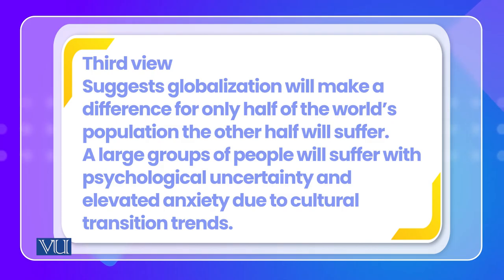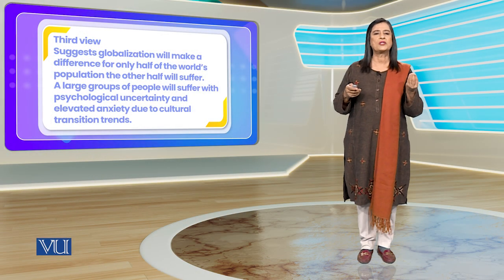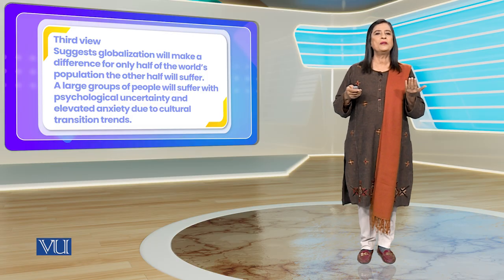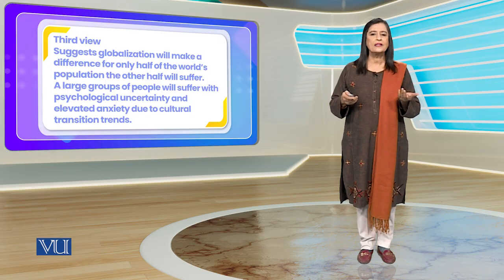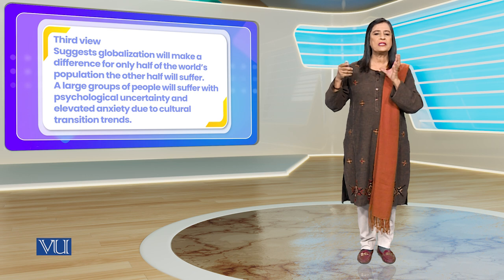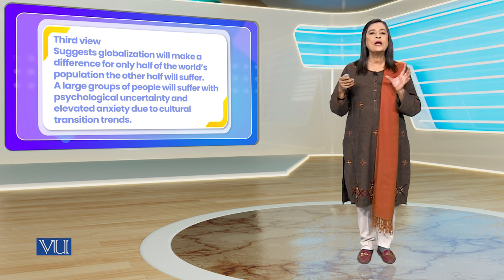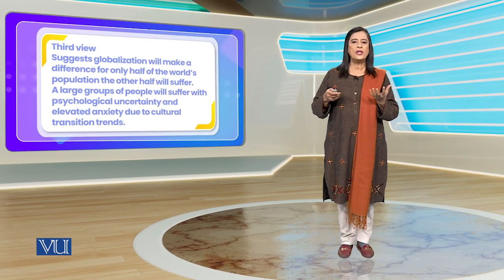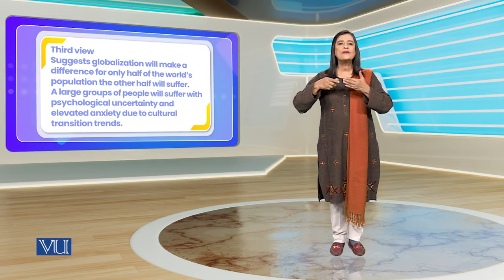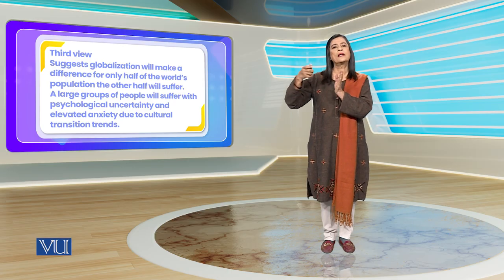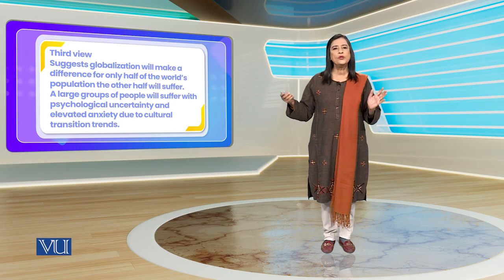This has been observed in local production — small farmers are at a loss because large companies are producing globally, big food chains are producing globally. So your small local shop or dhaba cannot compete with them. A large group of people suffer with psychological uncertainty — ke humara muqam kya hai, humara mustaqbil kya hai. They also experience anxiety because they have to undergo cultural transition. Someone living in a small place has to adopt a different kind of culture at the global level.